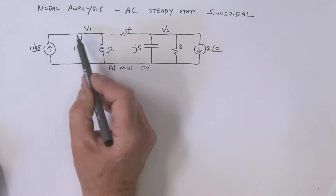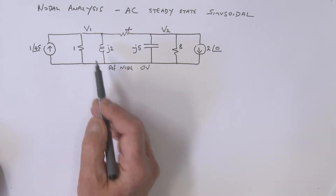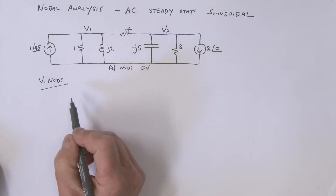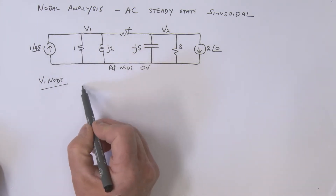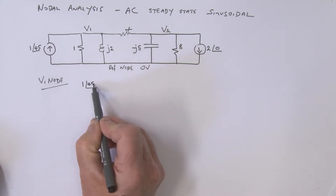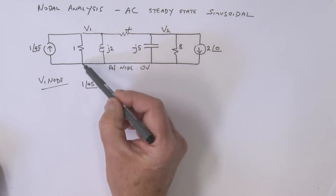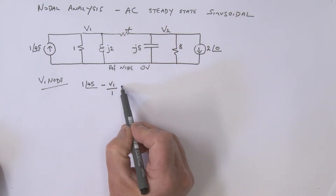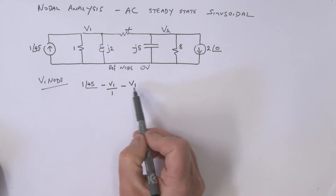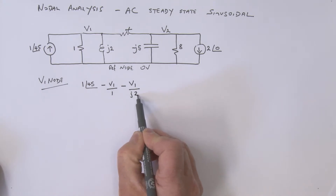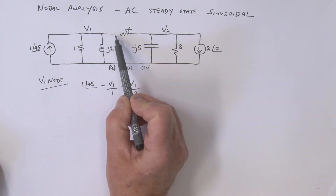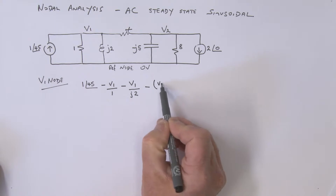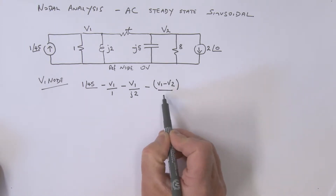Let's start working with the v1 node. Going into this node, we have a current of 1 at an angle of 45 degrees. We also have a current going in this direction: that's minus v1 over 1. There's the current going through the inductor: minus v1 divided by j2. And the current going through the resistor: minus (v1 minus v2) divided by 4.